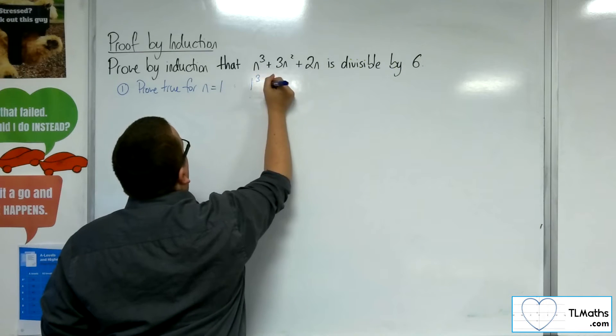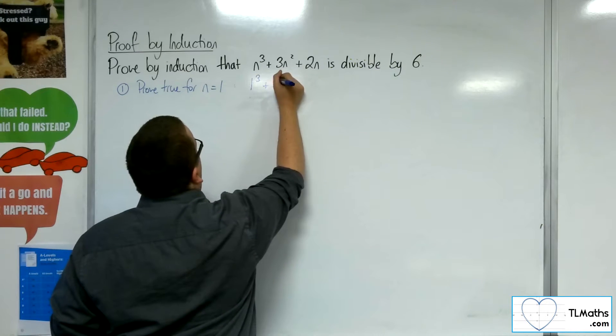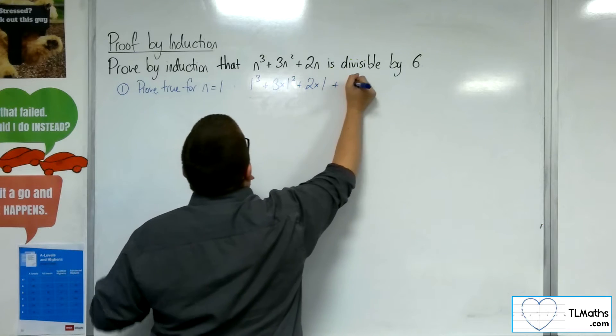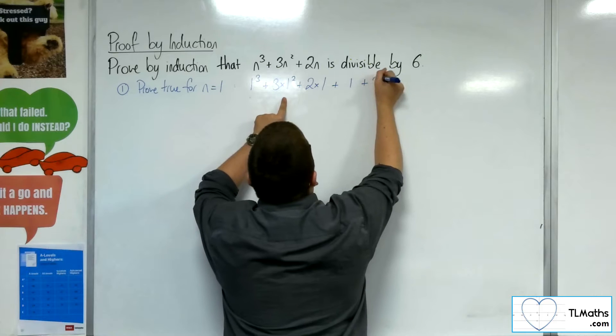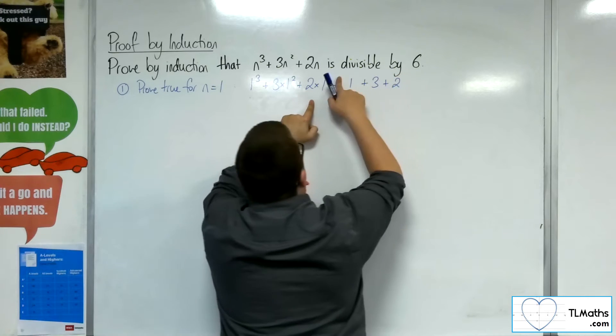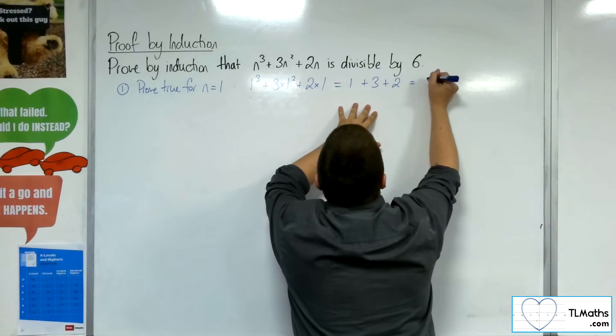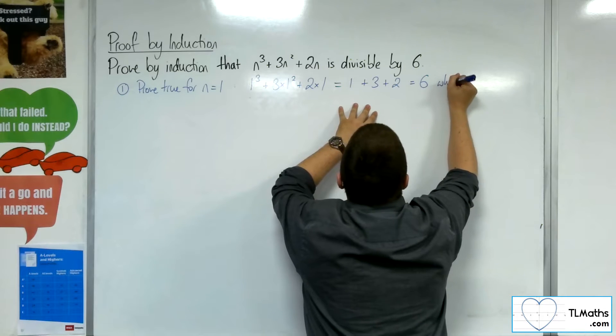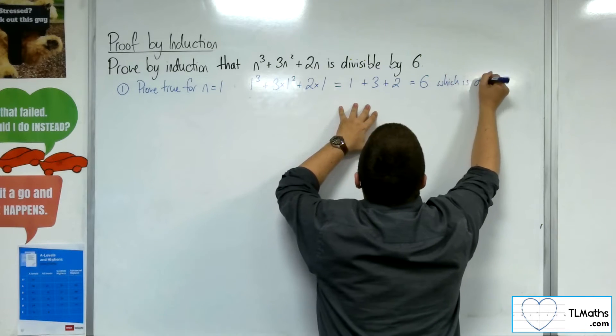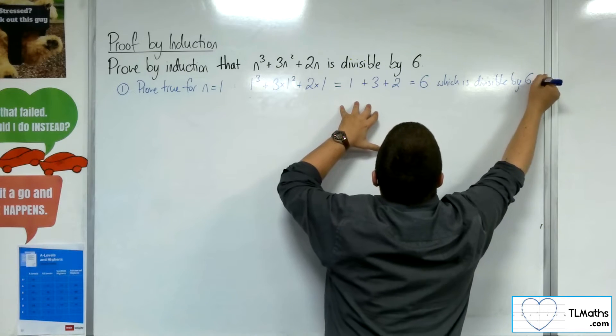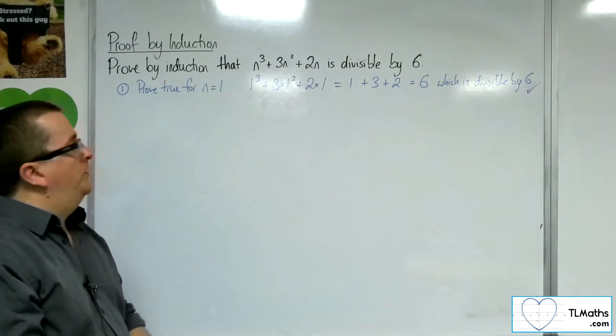We're going to get 1 cubed plus 3 lots of 1 squared plus 2 lots of 1. And that gives us 1 plus 3 plus 2, which is equal to 6, which is divisible by 6. So that's all sorted.